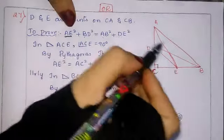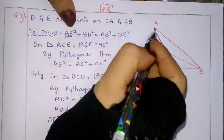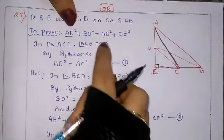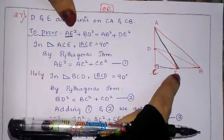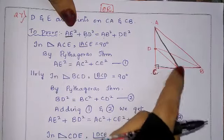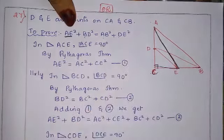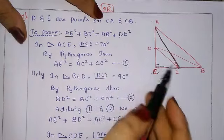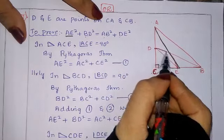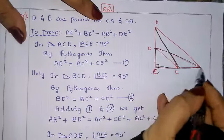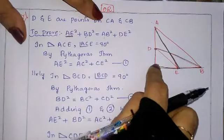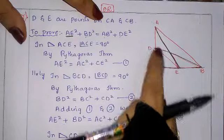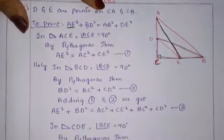In triangle ACE, angle ACE = 90°. By Pythagoras theorem: AE² = AC² + CE² — equation 1. In triangle BCD, angle BCD = 90°. By Pythagoras theorem: BD² = BC² + CD² — equation 2.